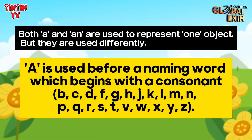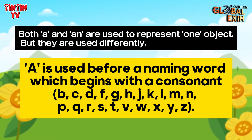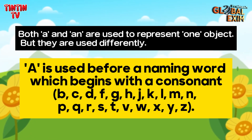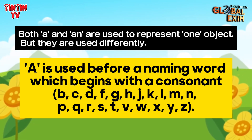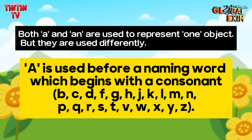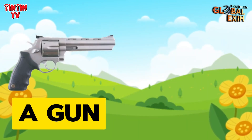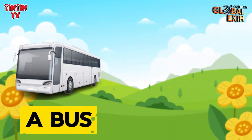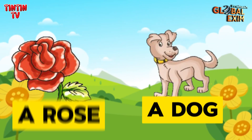A is used before a naming word which begins with a consonant: B, C, D, F, G, H, J, K, L, M, N, P, Q, R, S, T, V, W, X, Y, Z. Examples: a gun, a leaf, a monkey, a van, a bus, a cow, a rose, a dog, a pen.